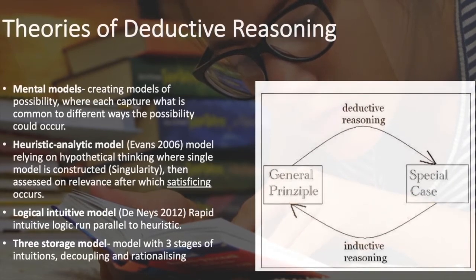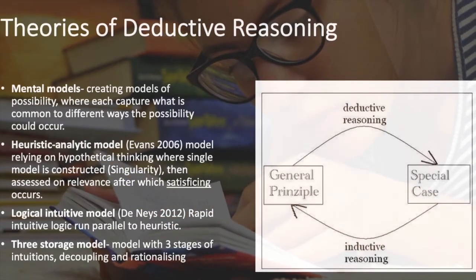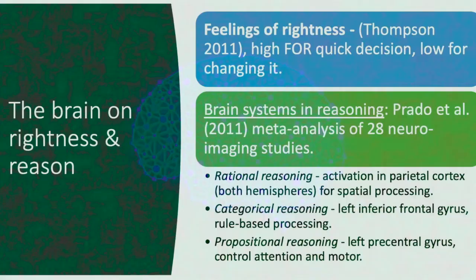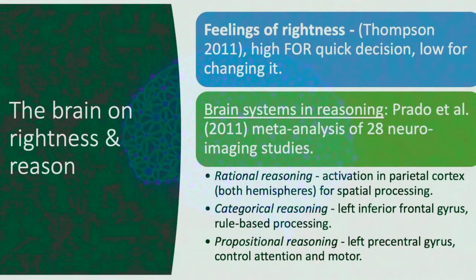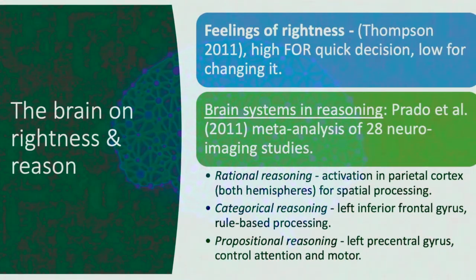The brain on rightness and reason: feelings of rightness according to Thompson in 2011 were high for quick decisions but were low when individuals changed their decisions.